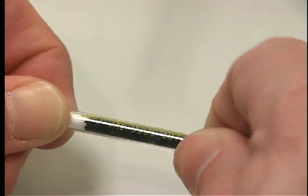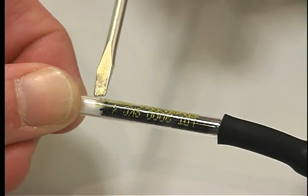Insert the open sorbent tube into the holder's rubber sleeve, with the arrow on the tube pointed toward the holder.